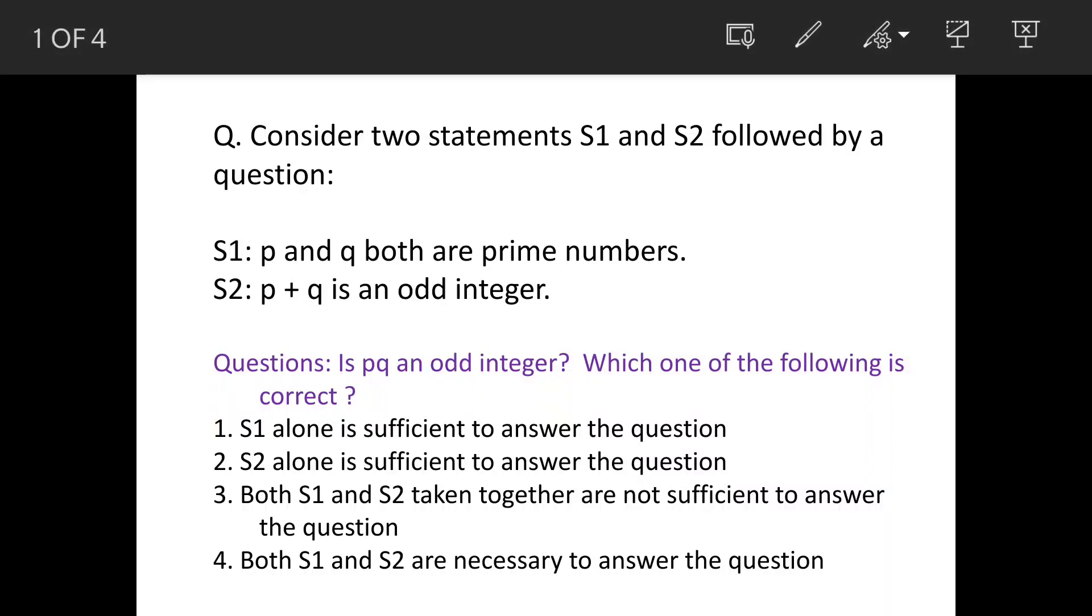We have two statements followed by a question. These are the statements and this is the question. P and Q are prime numbers. The second statement says p plus q is an odd integer. The question is: is pq an odd integer? And these are the options given.